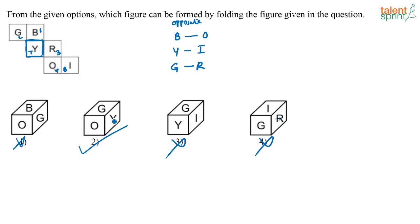Correct answer is option two: G, O, Y — possible. When you fold it with Y as the reference, it is easier. Otherwise it still comes the same way — you can imagine it either way. You can fold it around any one face. Generally, if they are asking for a particular face and its opposite, fold along that face. Otherwise anything is fine.